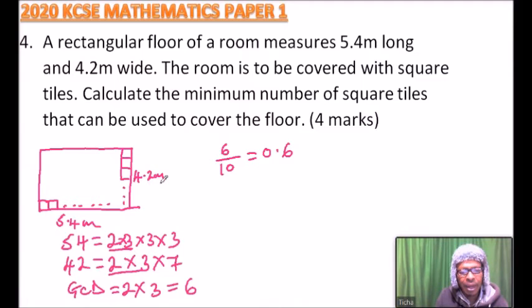That would be the size of the tile: 0.6 meters or 60 centimeters. To get the number of tiles, we divide 5.4 by the size of one tile, which is 0.6, and this equals 9.